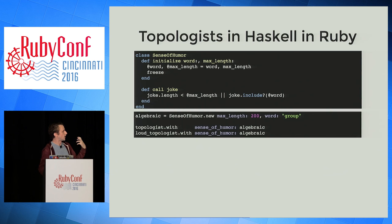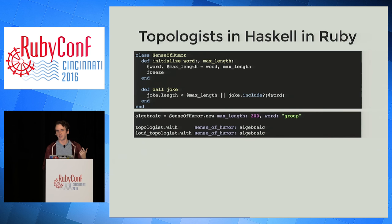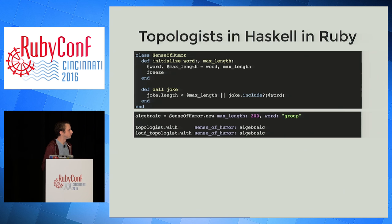Notably, the only thing I care about for delivery and sense of humor is that they have a call method. Procs have that, but they're not the only things — I can write anything that has a call method and pass it in. If I want to think about a sense of humor as an object with nested complicated logic, I can, and it's still API compatible with a proc, so I'm free to mix and match them.